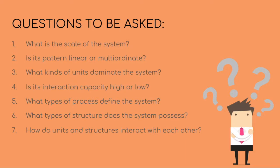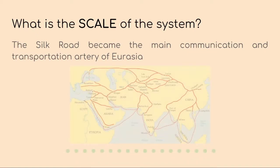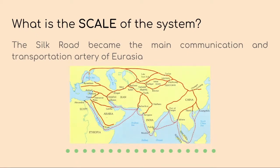Does the Silk Road meet the established criteria? What is the scale of the system? The Silk Road became the main communication and transportation artery of Eurasia. It stretched from the Han capital, Chang'an, to Antioch and the Mediterranean, and onwards by sea to Rome. Later, it also extended eastwards to Japan. The Islamic sea trade began with the first Islamic empire, the Umayyad Caliphate, and by the 10th century, Islamic trading networks had extended across most of Eurasia, North Africa and Africa's eastern coast, and some locations in West Africa.